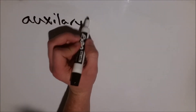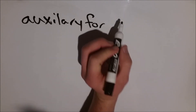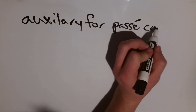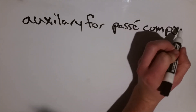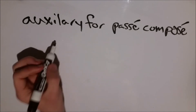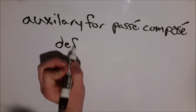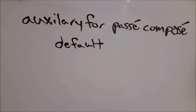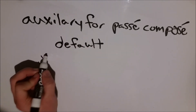Now one of the most common uses of avoir is as an auxiliary for the passé composé. Bear in mind, whenever we don't want to use être, we want to use avoir. It's basically the default auxiliary.